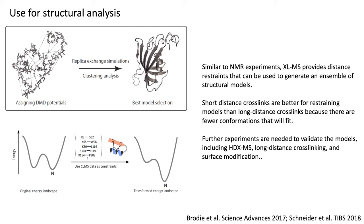In these cases, one would often need further experiments to validate the model, which would include deuterium exchange mass spec, long distance crosslinking, and surface modification. These are ensembles of models, predicted structures, not true structures themselves. So additional information to validate predictions is essential to really know that you have a good model.